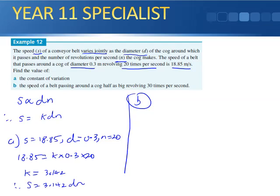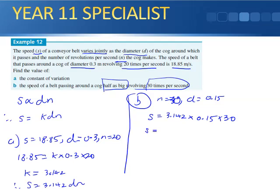Part b. The speed of a belt passing around a cog half as big revolving 30 times per second. So we know that n equals 30, and we know that d has to be half what it was. If it was 0.3, half of that is 0.15. And therefore I get s equals 3.142 times my d which is 0.15 times my n, 30. And when I work that out I get s equals 14.14 meters per second, and that will be to two decimal places.